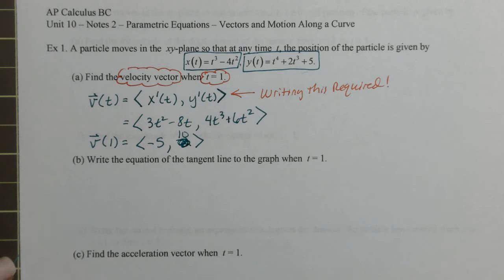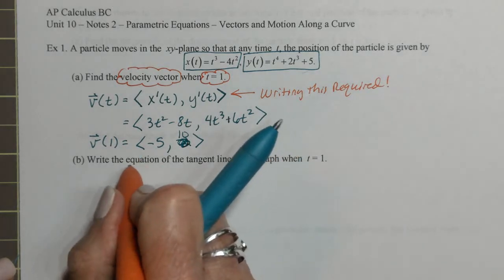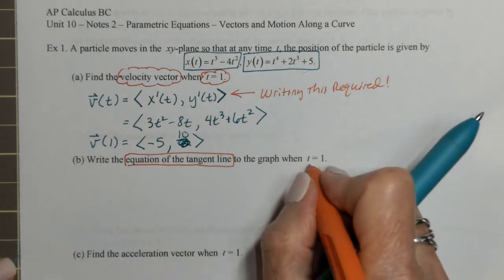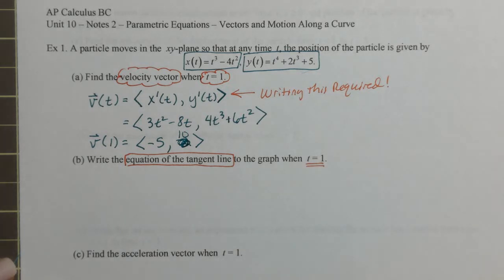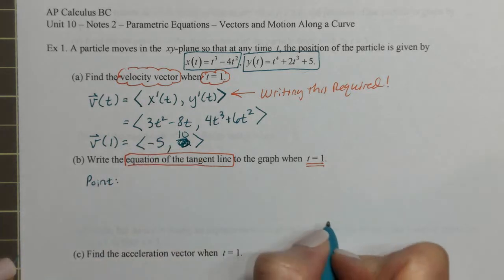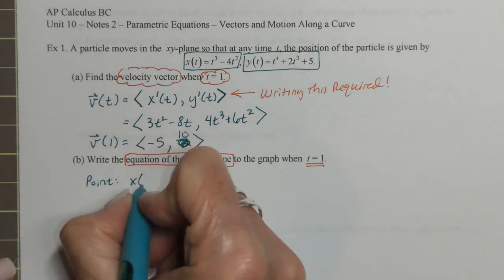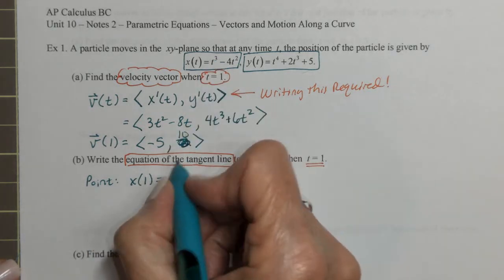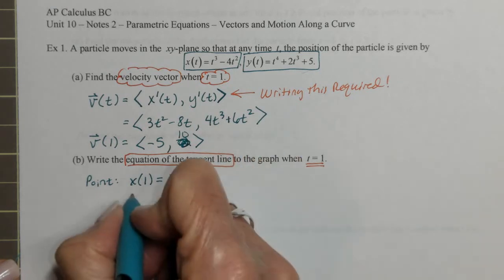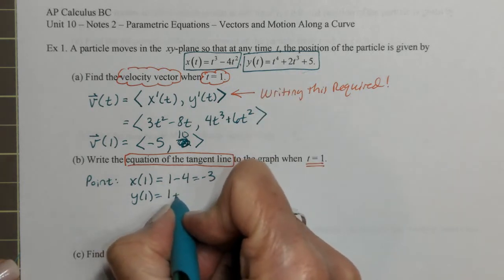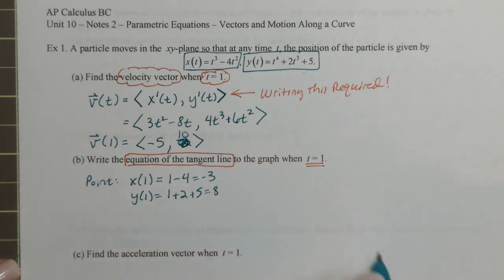Part b: write the equation of the tangent line at time 1. For that I need a point and a slope. The point at time 1: the x coordinate is x at 1 — that's 1 minus 4, which is negative 3. The y coordinate is y at 1 — that's 1 plus 2 plus 5, which is 8. So the point is (-3, 8).